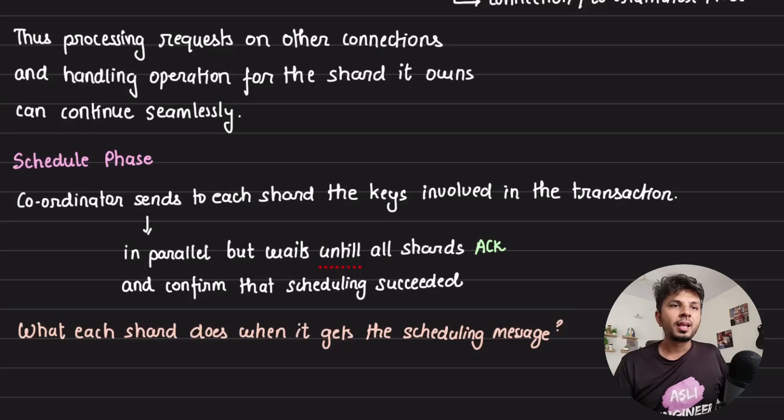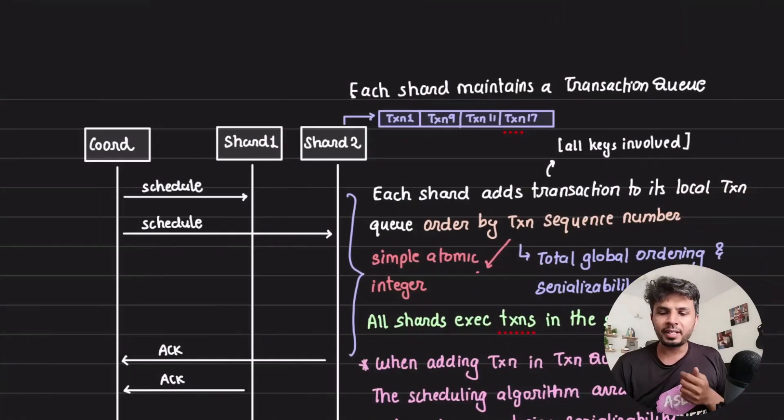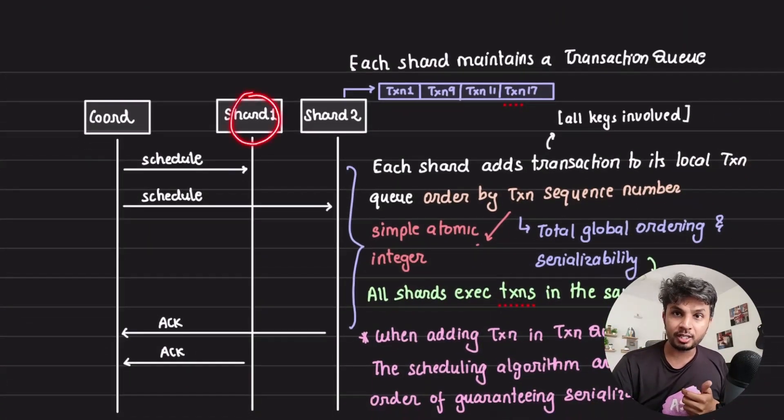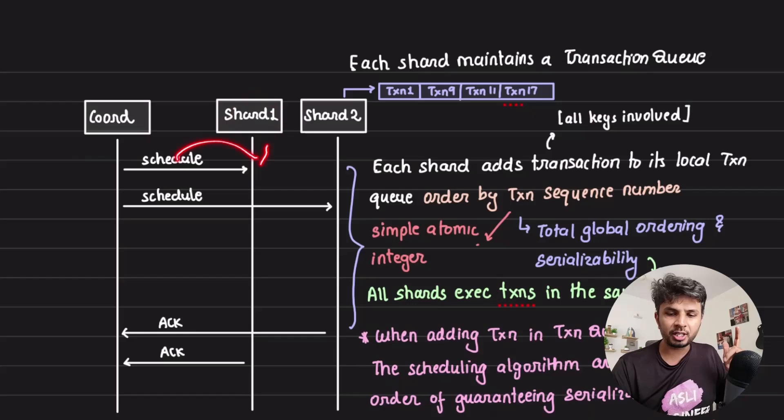What happens in the schedule phase? Your coordinator sends to each shard the keys involved in the transaction, saying hey, I want to schedule this transaction, and it waits for the acknowledgement to come in. What does a shard thread do when it receives a schedule call? When it receives the schedule call, each shard thread maintains a transaction queue.